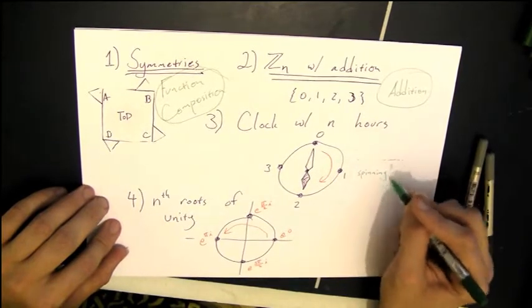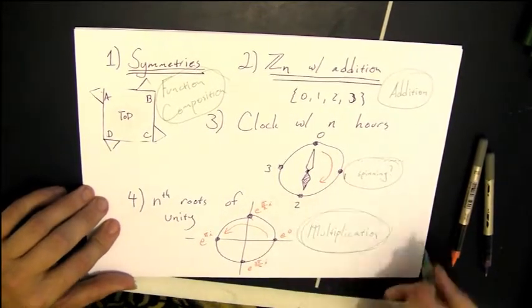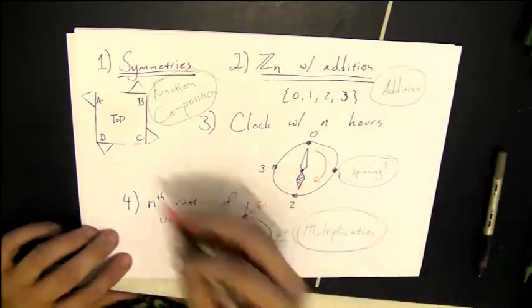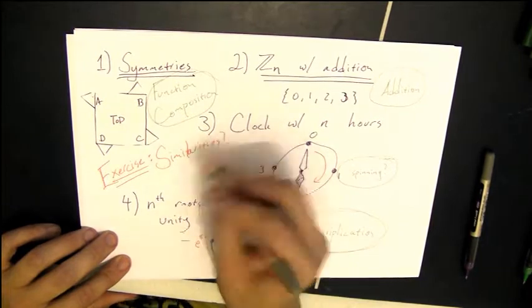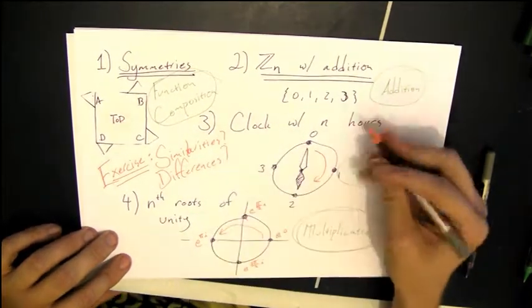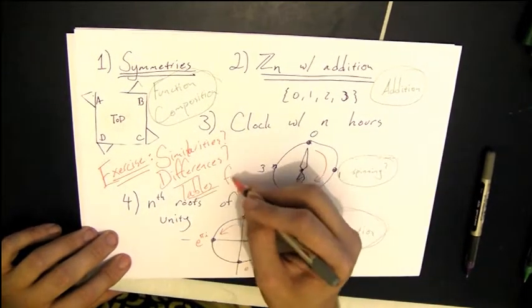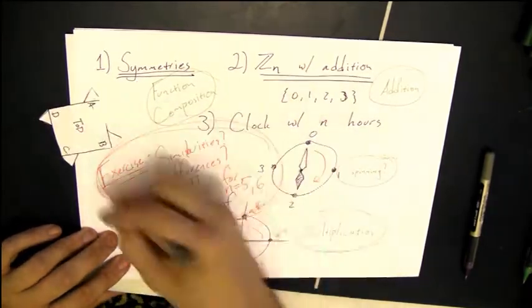So an exercise, kind of an expository exercise is, write a little bit about what the similarities or differences are between these different things. And also make addition, composition, multiplication tables for all of these four different cases with n equals 5 and n equals 6.